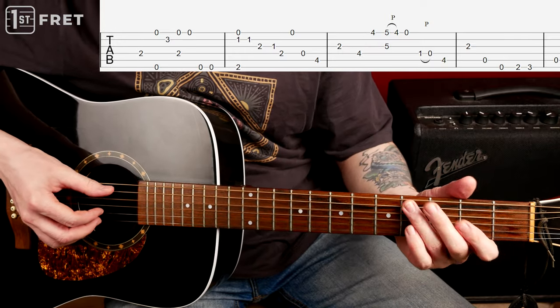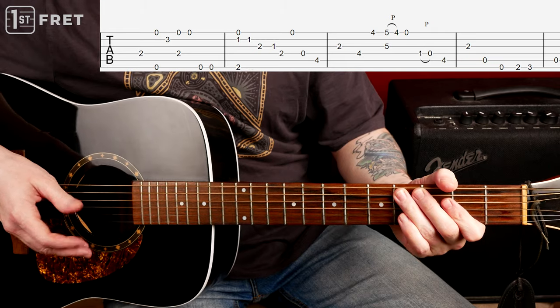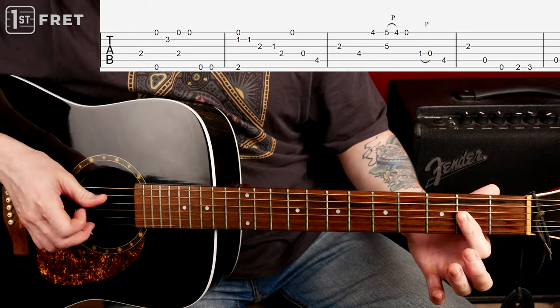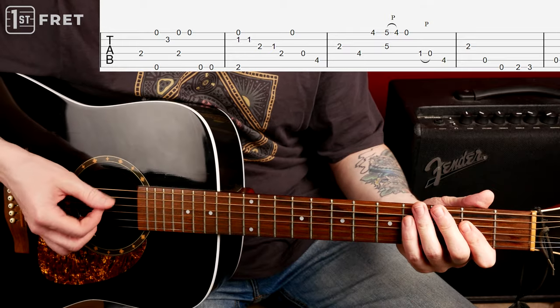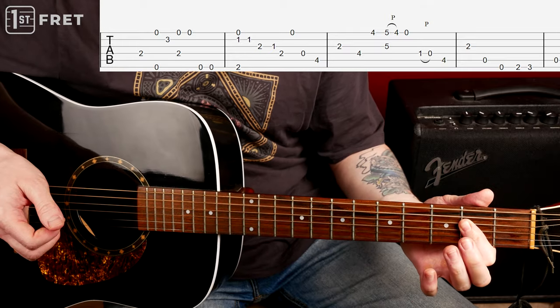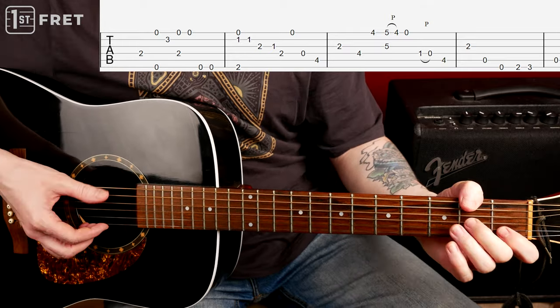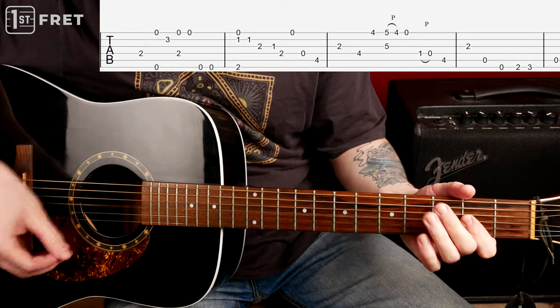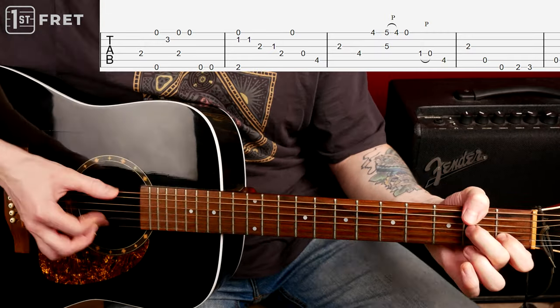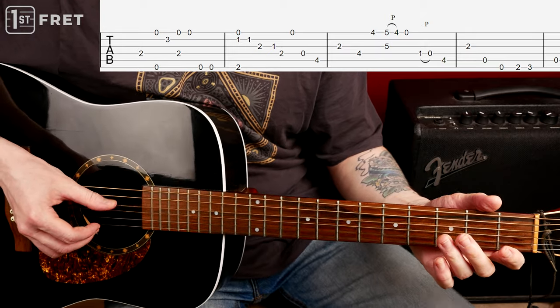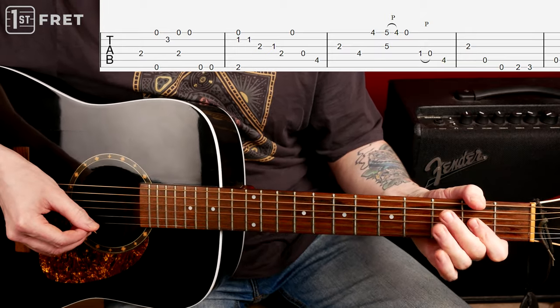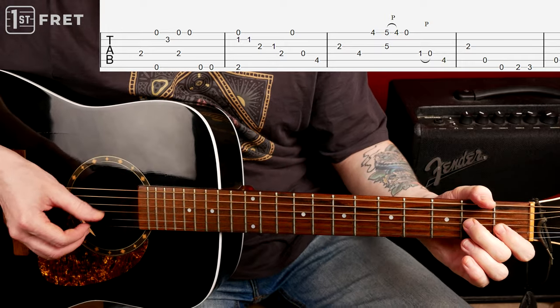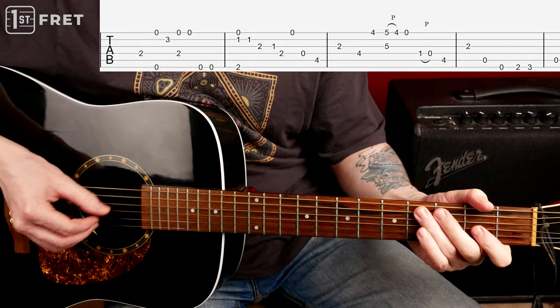Open D string, fret 4 on the A string, and we that A note again and it means that we returned to A chord here. So 1 and 2 and 3 and 4 and 1, and here is the new bar: 1 and 2 and 3 and 4 and 1.